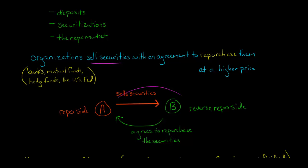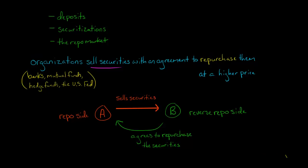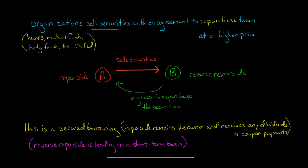You're selling the securities, but you're going to buy them right back. This isn't a permanent sale. Ultimately, what this is, is a secured borrowing. The repo side needs cash, and they are doing a secured borrowing where the securities are serving as collateral for this borrowing.